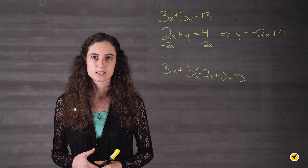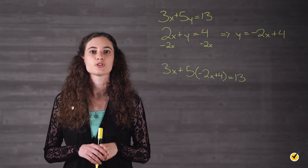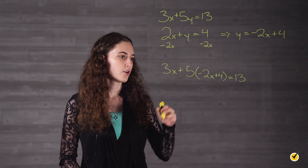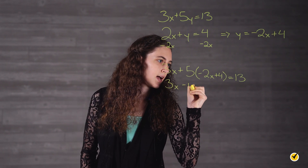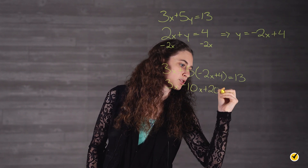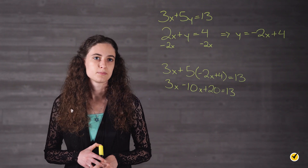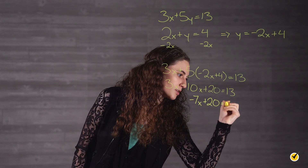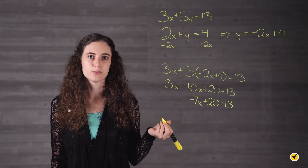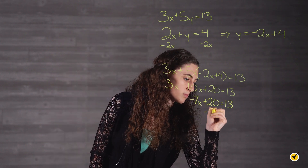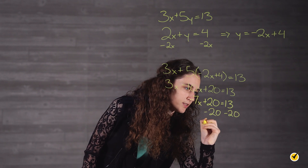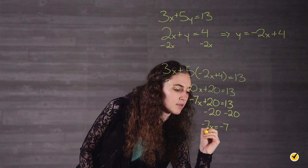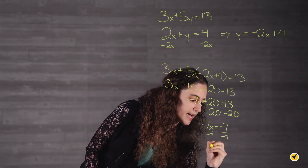Step 2 is when we take this value of y, which is negative 2x plus 4, and plug it into the y of our other equation, equation 1. This is the substitution process, giving us 3x plus 5 times the quantity negative 2x plus 4 equals 13. Now step 3 is solving for x. Using the distributive property, we distribute the 5, multiplying it by negative 2x and 4, giving us 3x minus 10x plus 20 equals 13. Combining like terms, 3x minus 10x gives us negative 7x plus 20 equals 13.